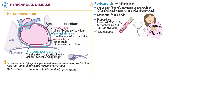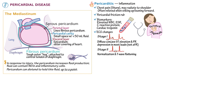ECG changes are clinically important and can help distinguish pericarditis from myocardial infarction. These changes are often described in four stages. Stage one, the earliest stage, is characterized by diffuse concave ST segment elevation and PR segment depression, seen in most leads except AVR. Note that in myocardial infarction, ST segments are typically convex and not diffuse. In stage two, normalization of the ST and PR segments occurs and the T waves flatten. In stage three, the T waves invert. In stage four, the T waves either normalize or persist as inverted waves.